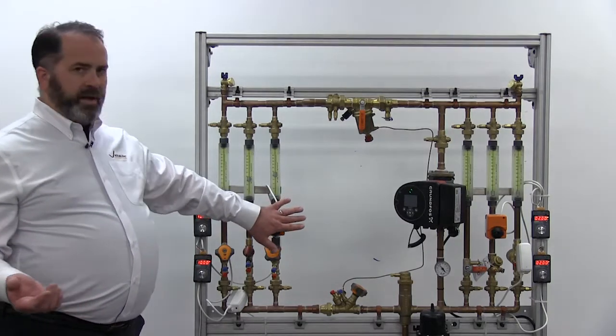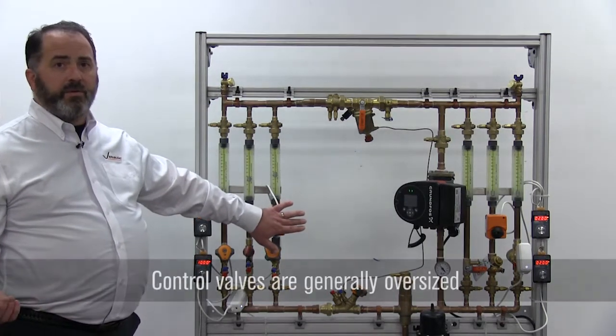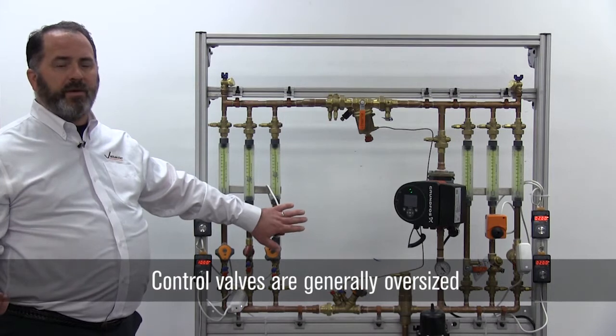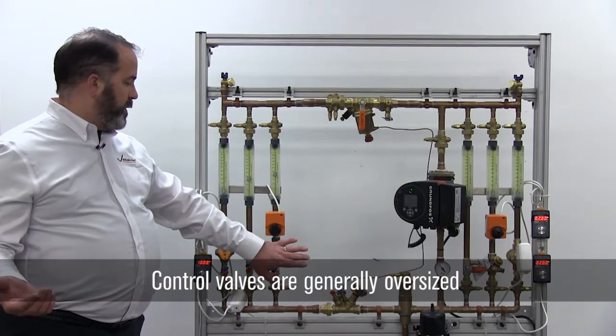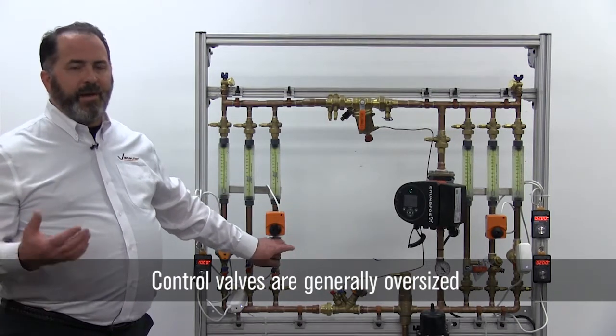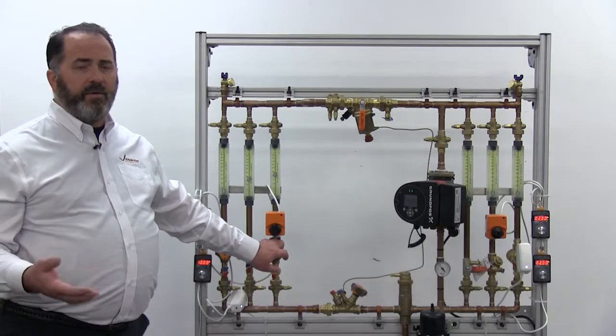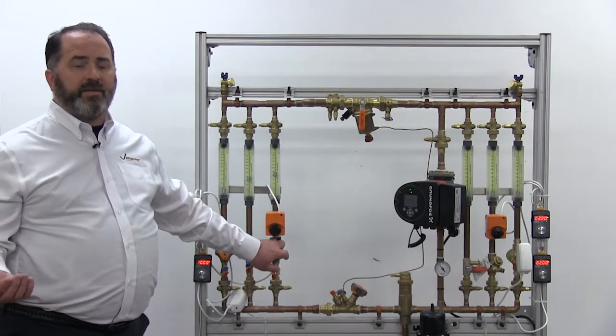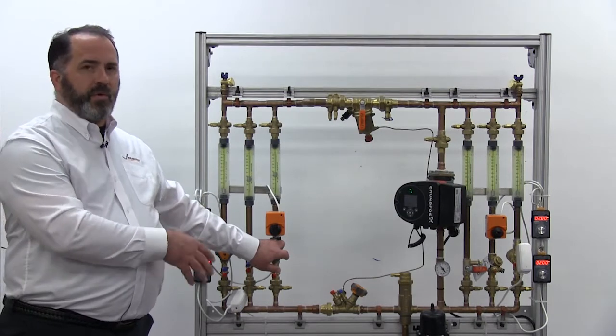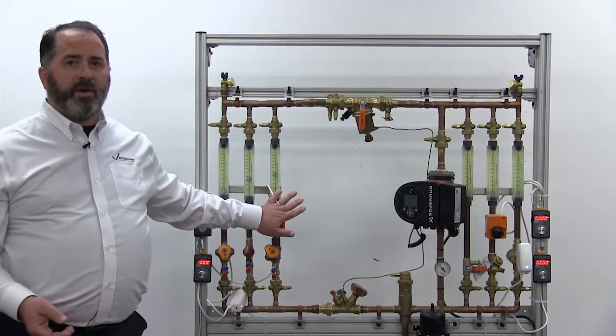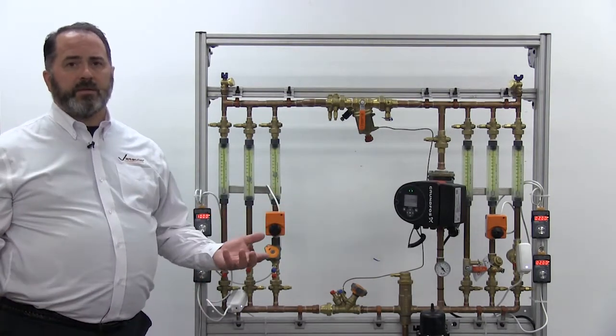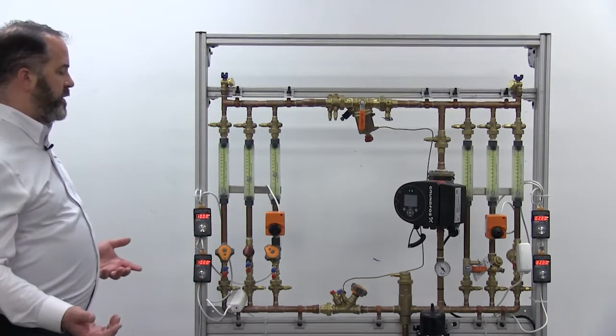In order to get the control they need, they'll tend to oversize the control valve because then they know they'll be able to get the available flow through it. And then you're making the problem even worse because now you have to throttle. Since you have an oversize control valve, you have to throttle back on the balancing valve even further, giving that balancing valve even more authority and taking more authority away from the control valve. Again, you're making the system worse by doing a one size fits all.